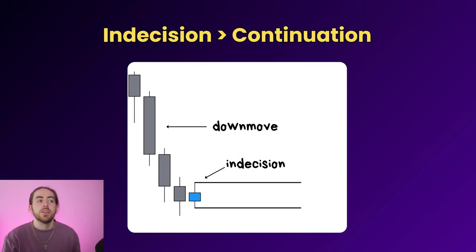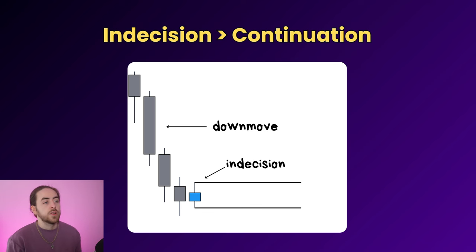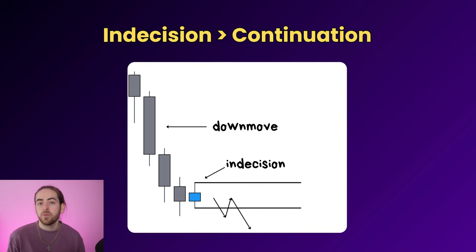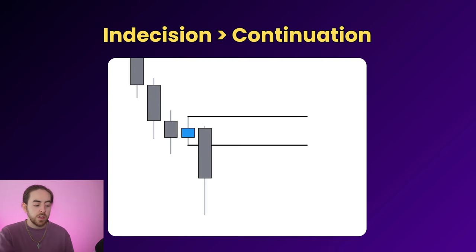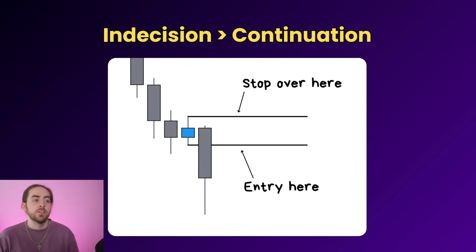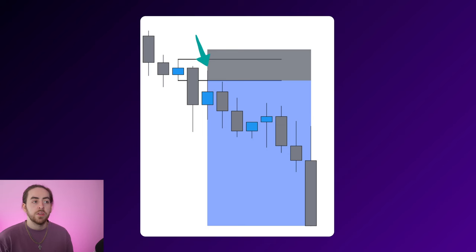The indecision continuation setup takes place when the market slows down in an existing trend. In a downtrend we have a down move and then a doji or indecision candle forms inside the downward move. What we're looking for is to see if the market will break below the doji and continue the downtrend. If we get that, we use the doji range for an entry and stop loss — enter from the doji, stop loss above, and when the market pulls back to that point we sell into the market and continue moving to the downside.